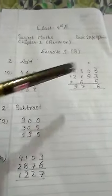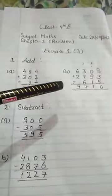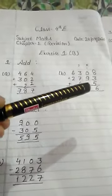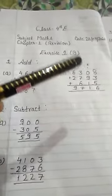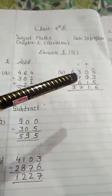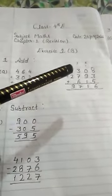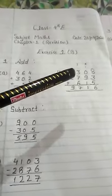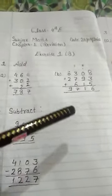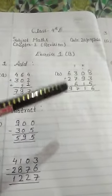Now come to question number B: 6,308 plus 2,793 plus 615. Now 8 plus 3 equals 11, and 11 plus 5 equals 16. Write down 6 here and take carry 1. Now 1 plus 0 equals 1, and 1 plus 9 equals 10, and 10 plus 1 equals 11. Write 1 and take carry 1. Now 1 plus 3 equals 4, 4 plus 7 equals 11, and 11 plus 6 equals 17. Write down 7 and take carry 1. 6 plus 2 is 8 and carry 1 equals 9.